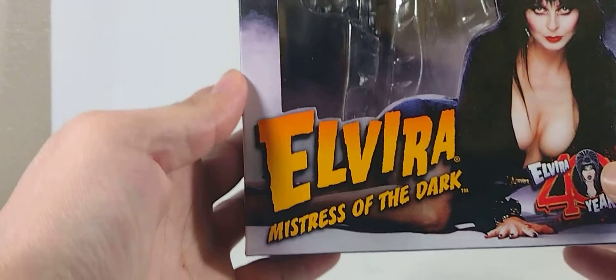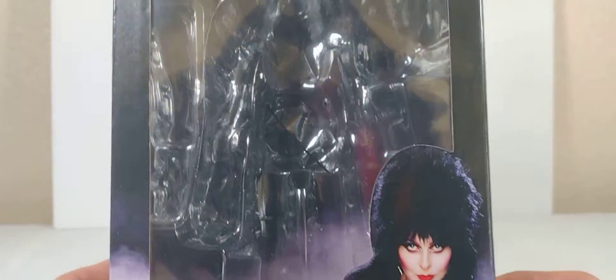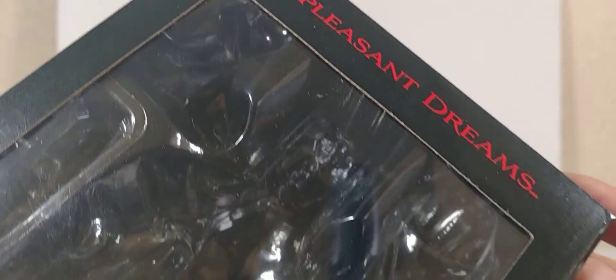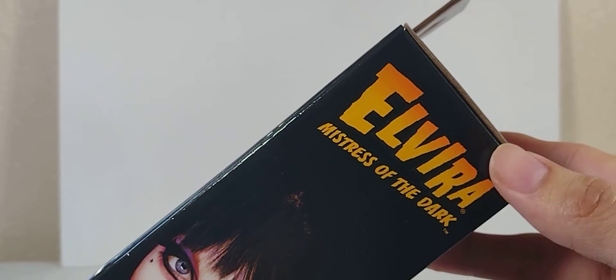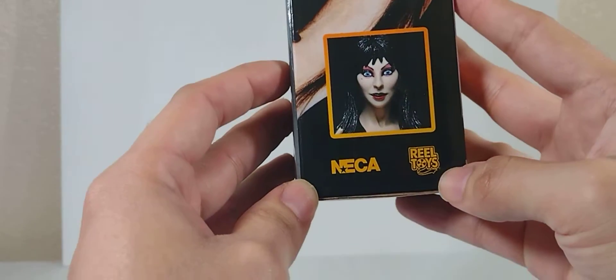But before we do, we're going to take a quick look at the package. Here it is—says Elvira right on the box, Elvira 40 years, nice beautiful picture of Elvira right here. A nice beautiful window as you can see where the figure and all the accessories are. Nice plastic window, says 'Unpleasant Dreams' at the top.